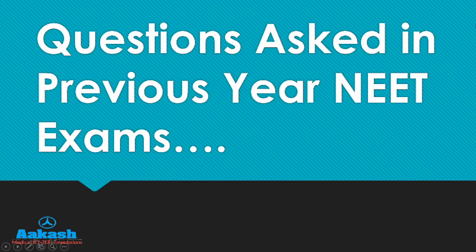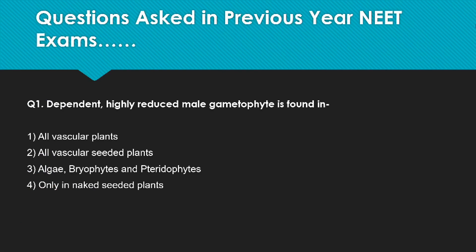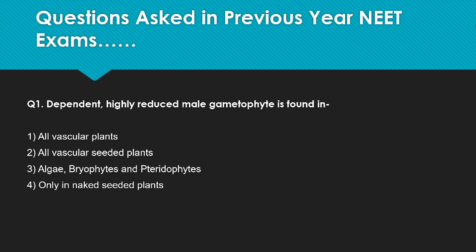Let us look at some questions asked in previous years. The first one is: dependent, highly reduced male gametophyte is found in. For such type of question, students should first understand the terms in the question. Dependent means that the male gametophyte is dependent on the sporophyte, and highly reduced means the gametophyte consists of few cells. We have already learnt in previous videos that dependent and few-celled male gametophyte is found in gymnosperms and angiosperms.